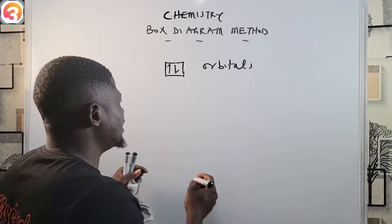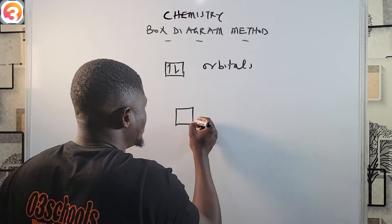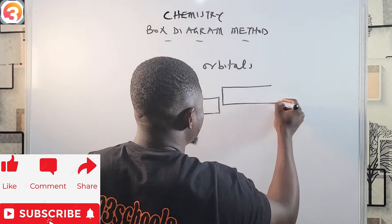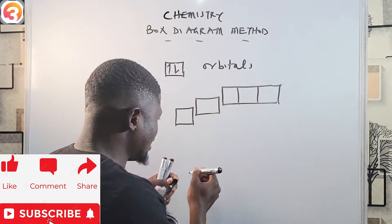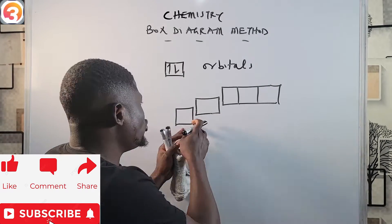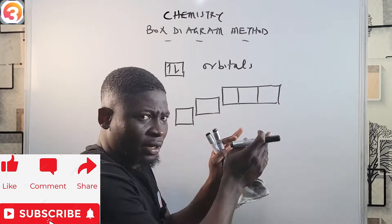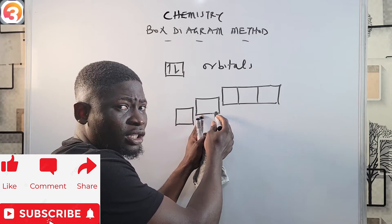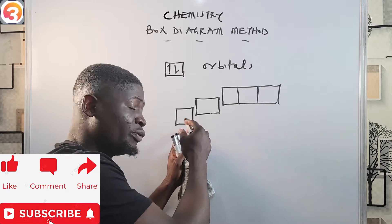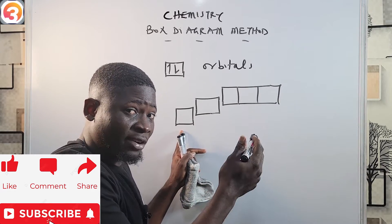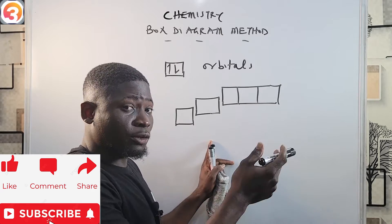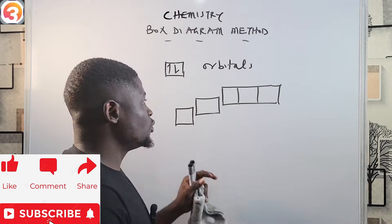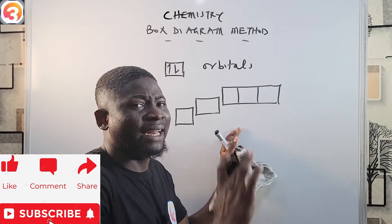The boxes are usually drawn at different energy levels. The first box is lower, the next box is slightly higher, and a box of higher energy is placed even higher. This is because the second orbital has higher energy than the first. For example, the 1s and 2s orbitals are not on the same level — the 2s has higher energy, and the 2p has higher energy than the 2s and 1s.